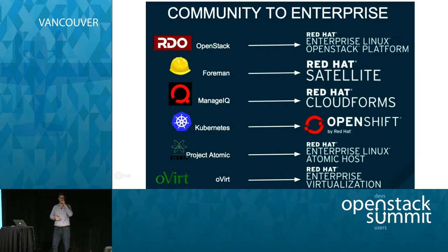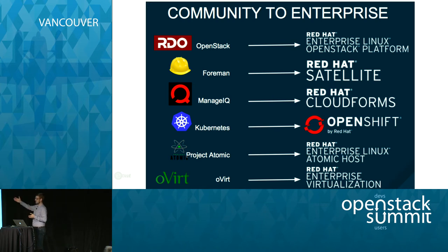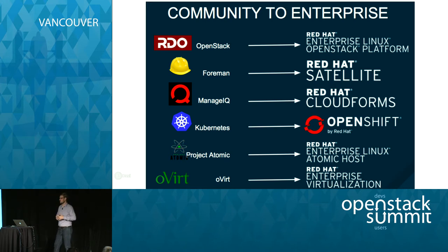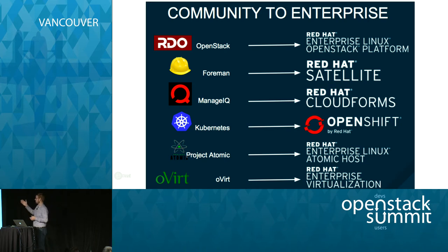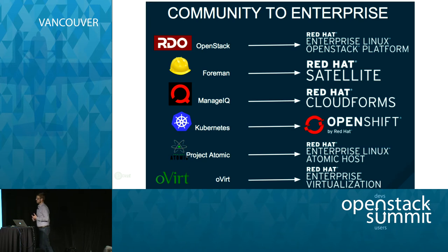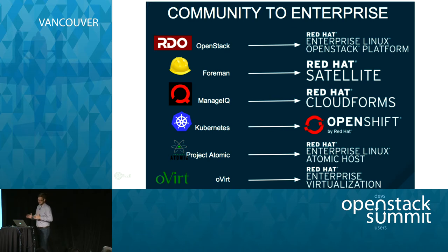We do all this in communities. We're here at OpenStack Summit, so everybody's interested in OpenStack. You're all familiar with RDO — Red Hat's OpenStack distribution. But there are a number of other projects we bring together in our cloud infrastructure, ranging from Foreman, which becomes Red Hat Satellite, to ManageIQ, which becomes Red Hat CloudForms, and other projects like Kubernetes that we're leveraging inside OpenShift, Project Atomic, and oVirt, which become Red Hat Atomic Hosts and RHEV. Everything is this community-enterprise model.